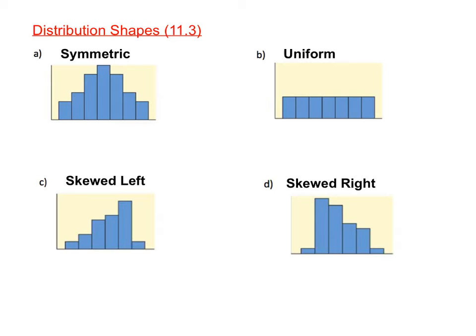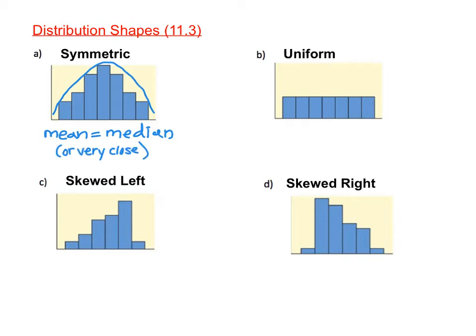The next thing we learned about in this chapter was the different shapes for data distributions. The first shape is symmetric. Symmetric graphs are graphs that are evenly distributed. If you connect this with a smooth curve, you'll see it has that kind of hill shape, and you'll also see how the halves of that graph are roughly equal to each other. For any graph that's symmetric, the mean will be equal to the median or very close to equal — they will not always be the exact same. This next graph is uniform. A uniform graph is a graph where all of the data is the exact same height or really close to the same height. Because uniform graphs are also symmetric, the mean will be equal to the median.